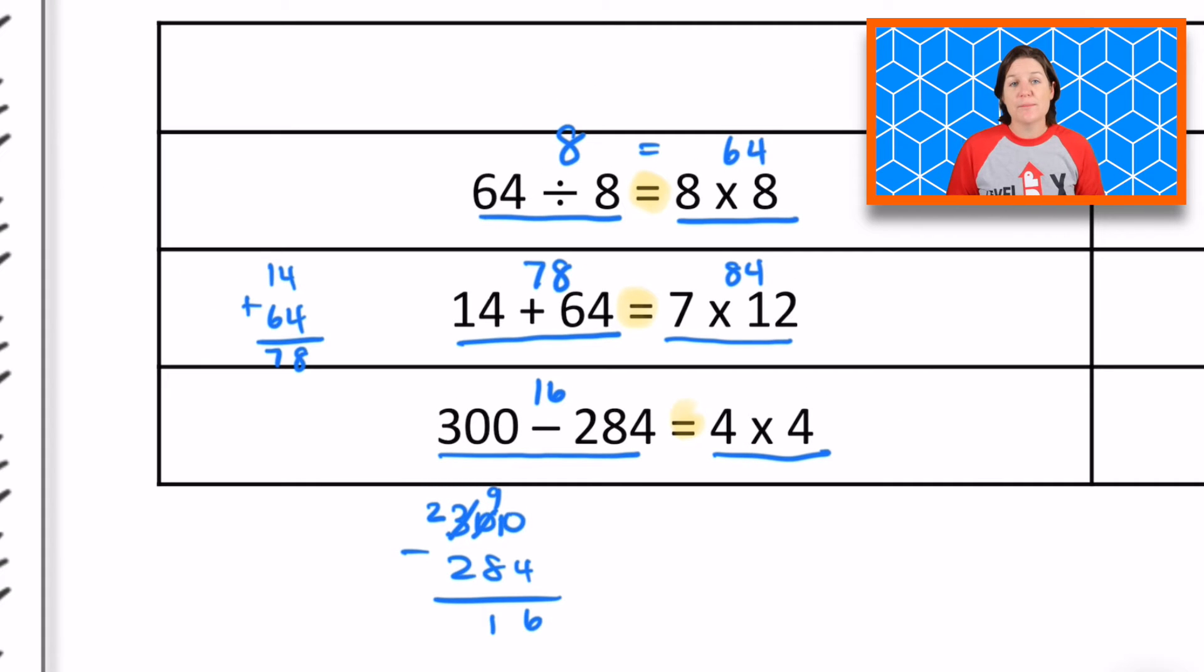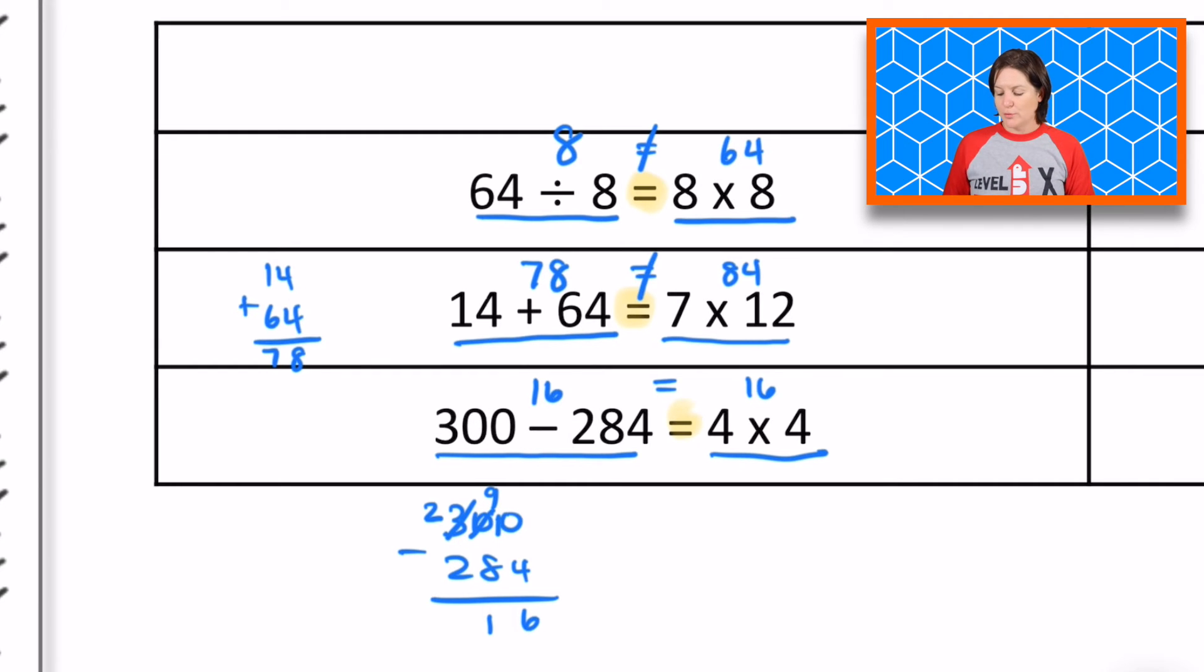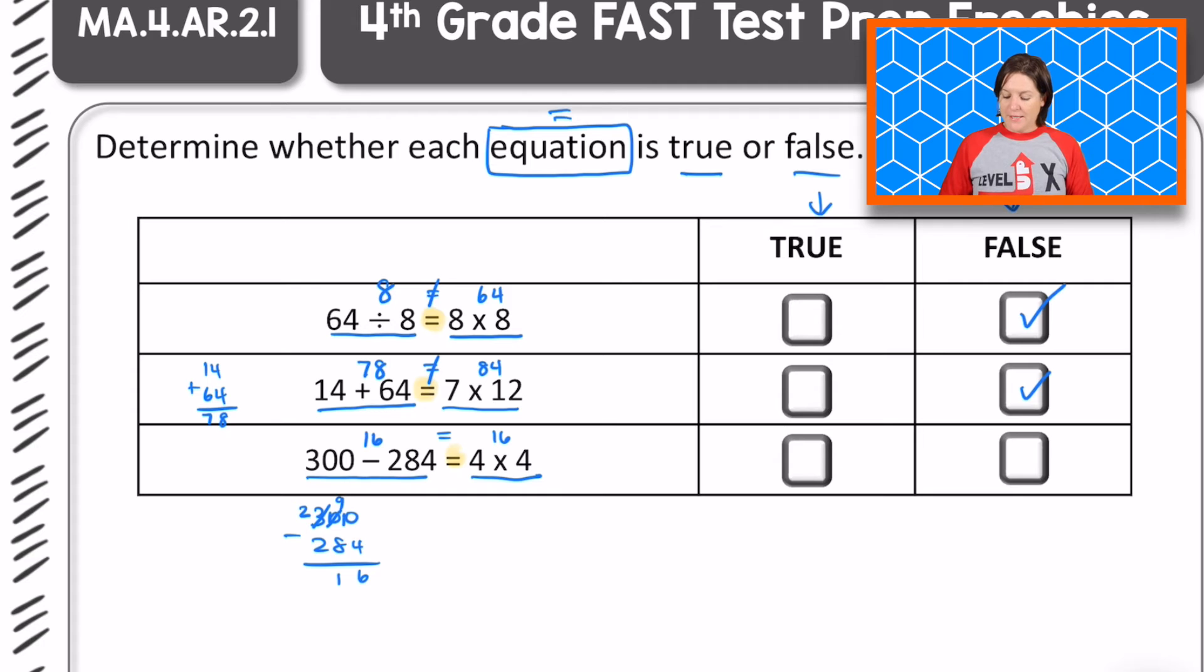And four times four. What is four times four? It's 16. Is 16 equal to 16? It is. Before I mark true though, I'm realizing up here that I left this up here. Eight equals 64. That is not true. I need to put the not true symbol down there. And 78 equals 84. That is not true as well. But the left side and the right side are true on the final equation that we have. So we will mark true.